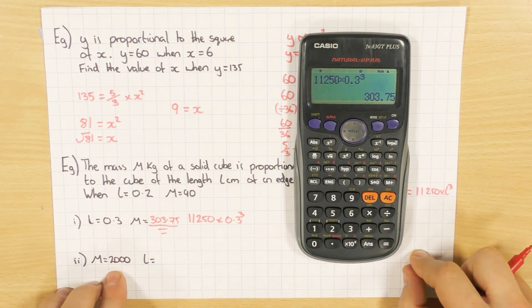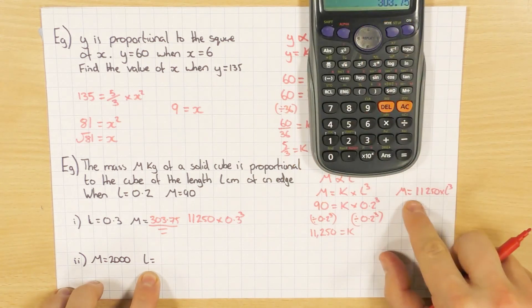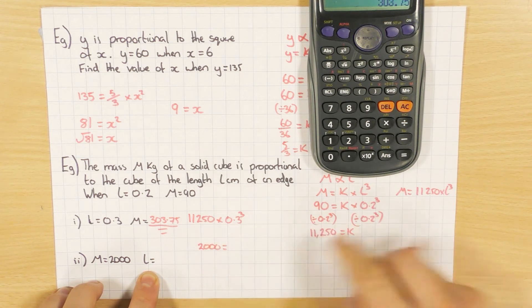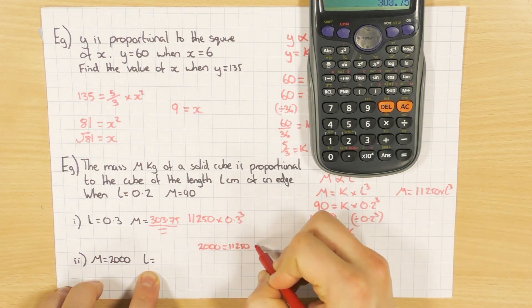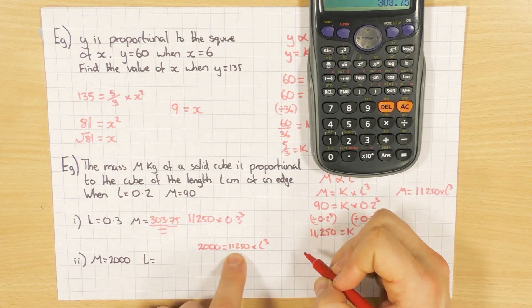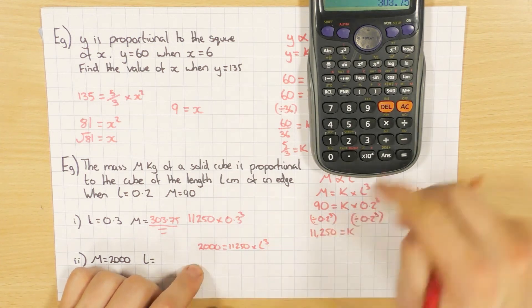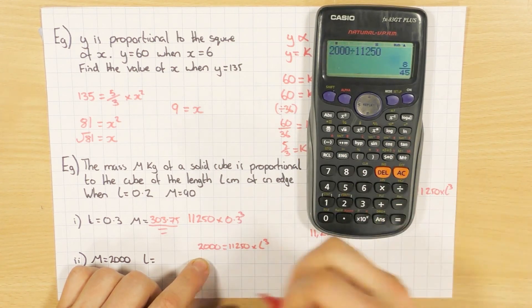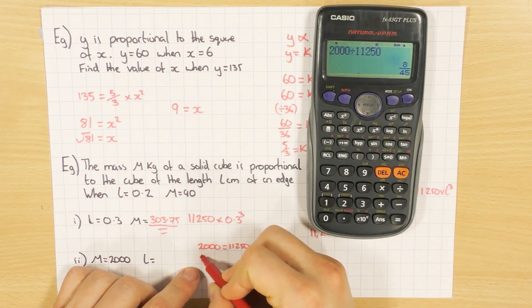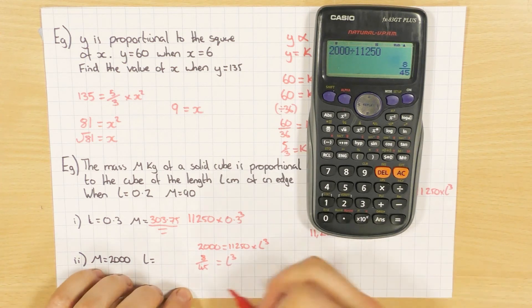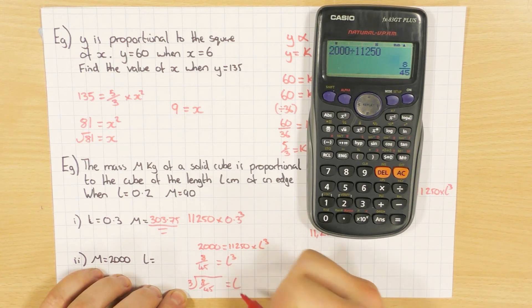And this time, if m is 2,000, what's l? So this one's going backwards. So if m is 2,000, I'm going to have, I'll do it here, 2,000 equals the 11,250 times by l cubed. So rearranging this, I'm going to divide both sides by 11,250. So let's see what that is. What is 2,000 divided by 11,250? Let's leave it as a fraction. 8 over 45 equals l cubed. And the opposite of cubing a number is the cube root. So it's cube root 8 over 45. Let's do that.